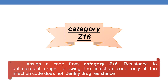Whenever there is an evidence of resistance to antimicrobial drugs in the literature, we have to assign an additional code from the category Z16 to indicate the resistance to antibiotics.